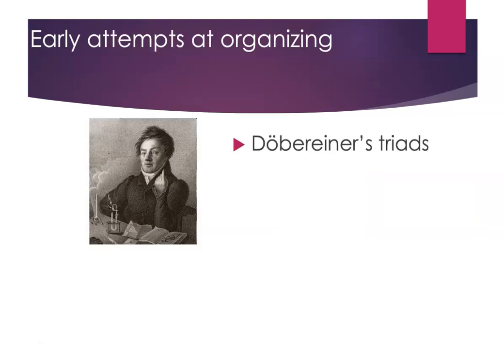One early attempt was Döbereiner's triads. He noticed that there were groups of three elements that had patterns in their boiling points and their melting points, and he called them triads because they were groups of three.